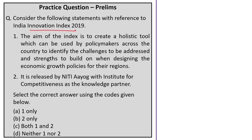Question 2: Consider the following statements with reference to the India Innovation Index 2019. Statement 1 is correct — it reflects the aim of the index. Statement 2 is also correct — it is released by NITI Aayog with the Institute for Competitiveness as the knowledge partner. Correct answer: Option C, both statements 1 and 2.